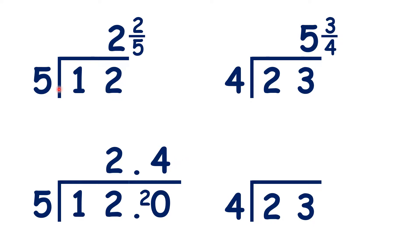So 12 divided by 5 is 2 and 2 fifths as a fraction, or 2.4 as a decimal. And this makes sense. You know that 2 fifths is equivalent to 4 tenths. So that's why, when writing the remainder as a decimal, we have a 4 in our tenths column.